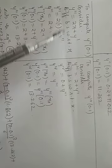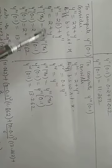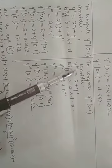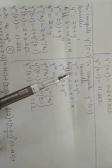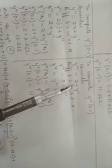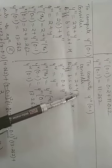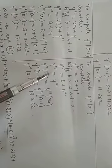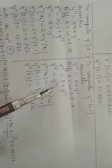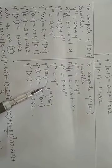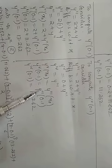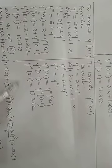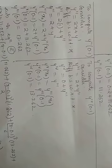Computing y⁴(0.1): differentiate y''' = 2 + y'', giving y⁴ = y'''. So y⁴(0.1) = y'''(0.1) = 13.262. All the computed values are now substituted into the Stage 2 Taylor series expansion.